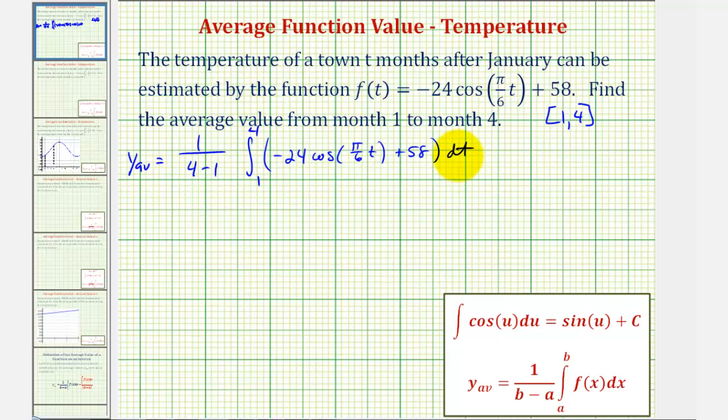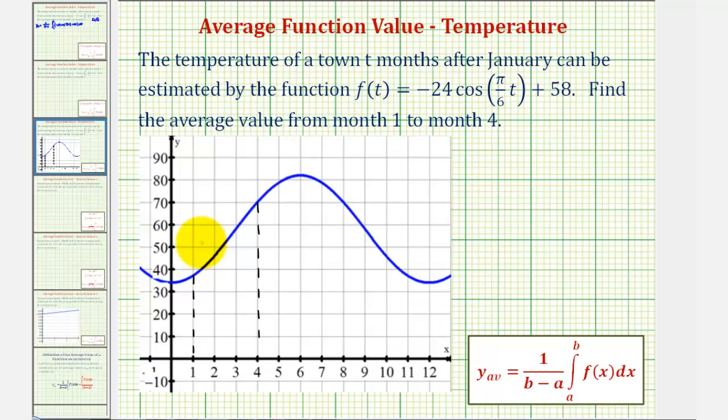Before we find this value, let's look at the graph of our function over this closed interval. Here's the graph of our function, and here's the closed interval from one to four. Because the function is non-negative, the value of the definite integral would give us the area bounded by the function on the x-axis, which would be the area of the shaded region here.